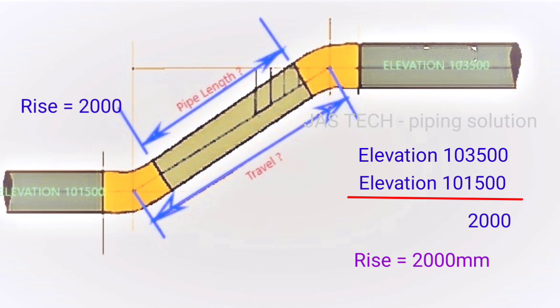So our elevation: elevation of the top pipe is 103500, elevation of the bottom pipe is 101500. So you minus from top pipe to bottom pipe. The result will be 2000. That 2000 is the rise side measurement.